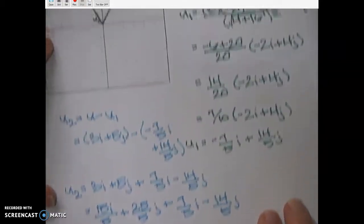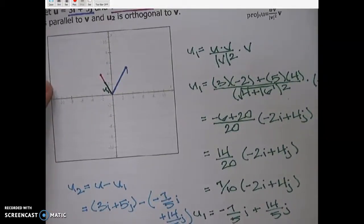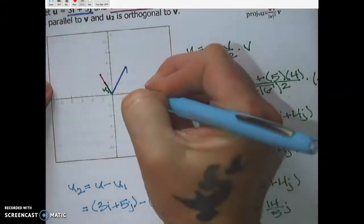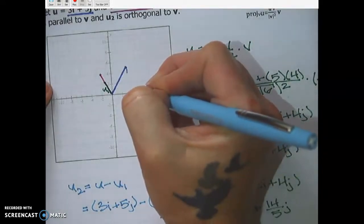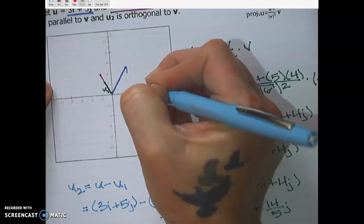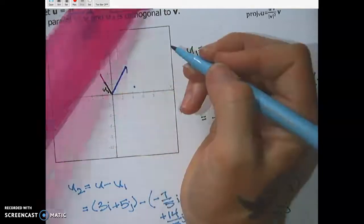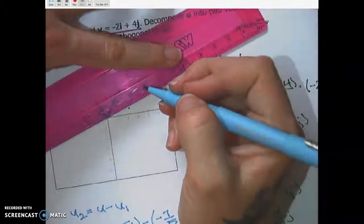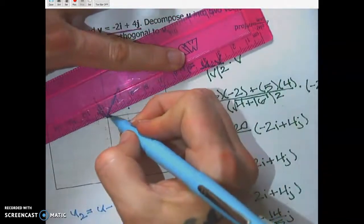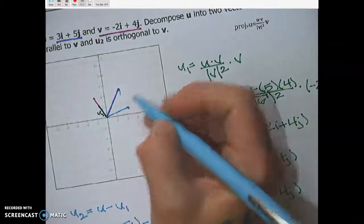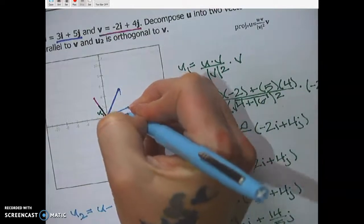And then if we want to check ourselves up here, let's see, 22 over 5 is going to be 4 in a little bit, right? And 11 fifths is going to be just 1 in a smidge. And again, it's not going to be perfect, but I can see that it is somewhat orthogonal, right?